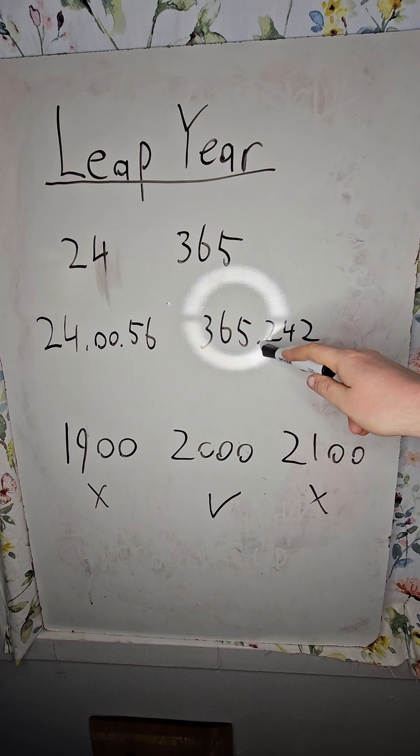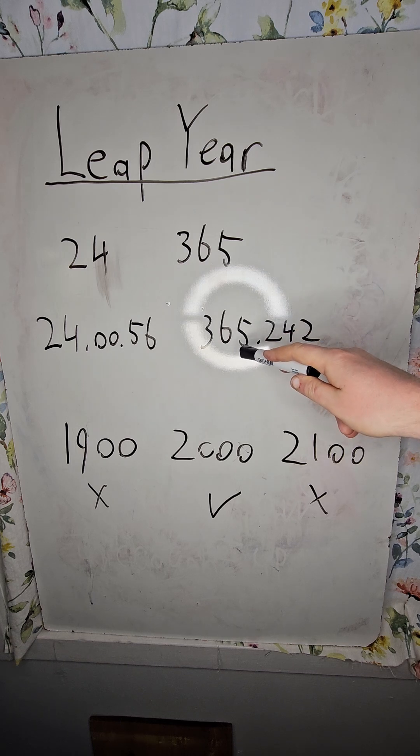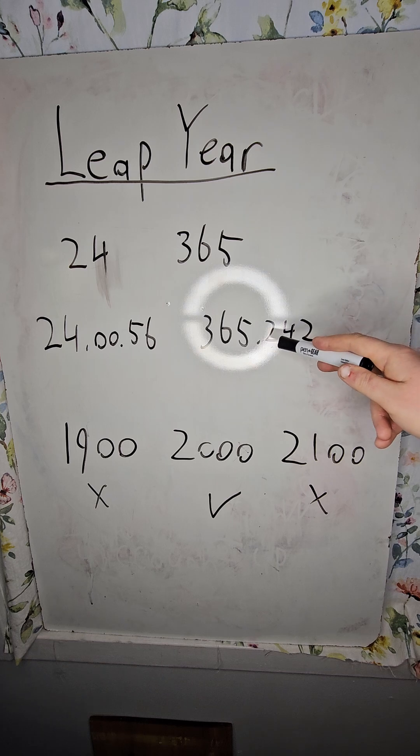But I hear you saying that 0.242 isn't 365.25. So why do we have a leap year every four years? That doesn't add up.